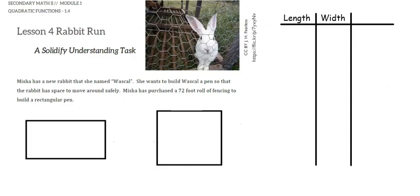Misha has a new rabbit she named Waskell, and she wants to build Waskell a pen so that the rabbit has space to move around safely. She has 72 feet of fencing to build a rectangular pen. In this task, we're asked to find dimensions for the pen so that Waskell has the largest possible area for his pen.